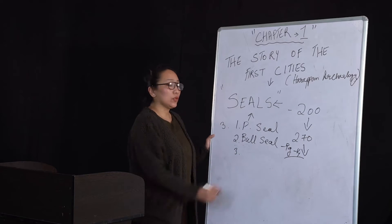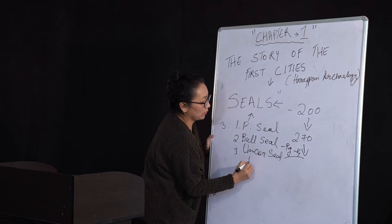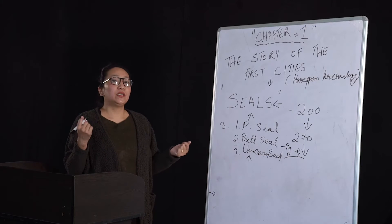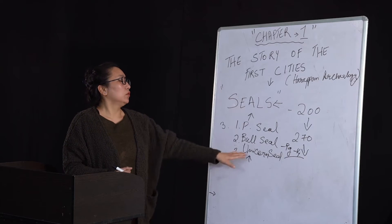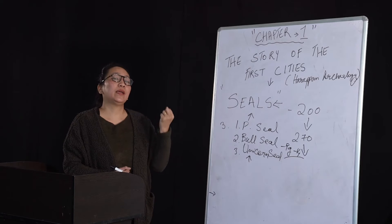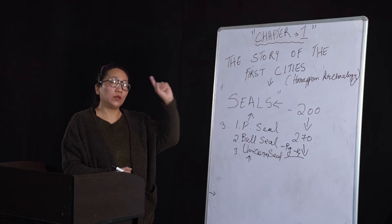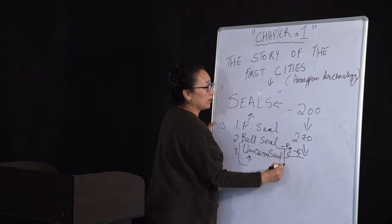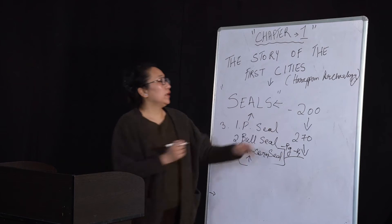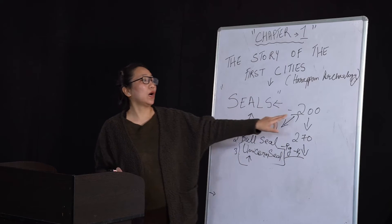The third important seal is the unicorn seal. A unicorn is a very imaginative animal. We understand that the artists or the people of that ancient time had very high imagination and they had used fantasy in the seal where a bull had one horn. This seal is more of an artistic seal. These three seals are considered to be the most important of the 200.